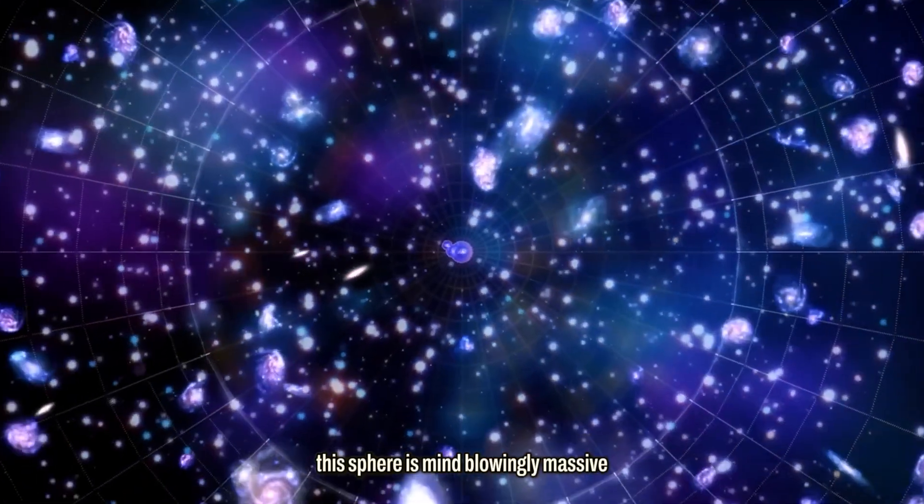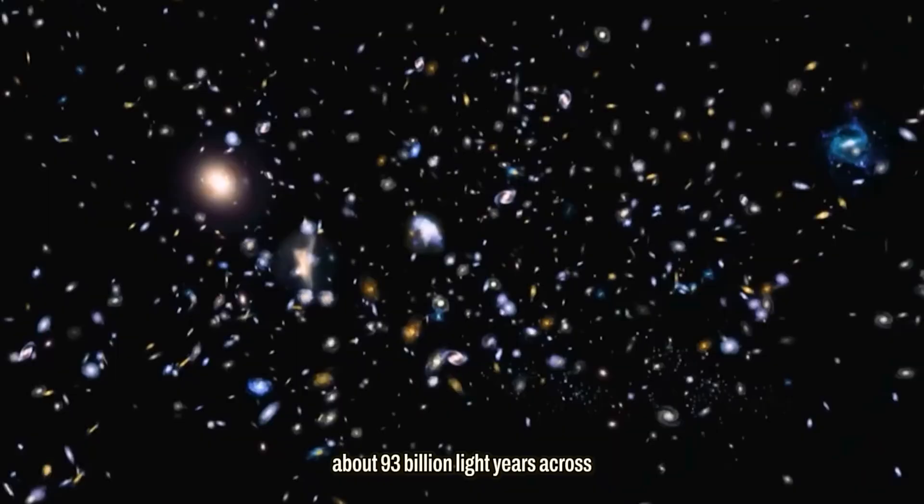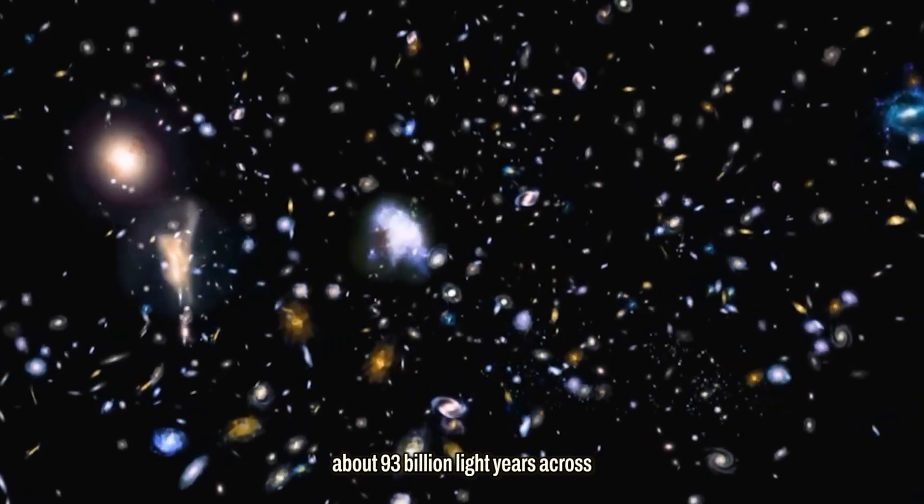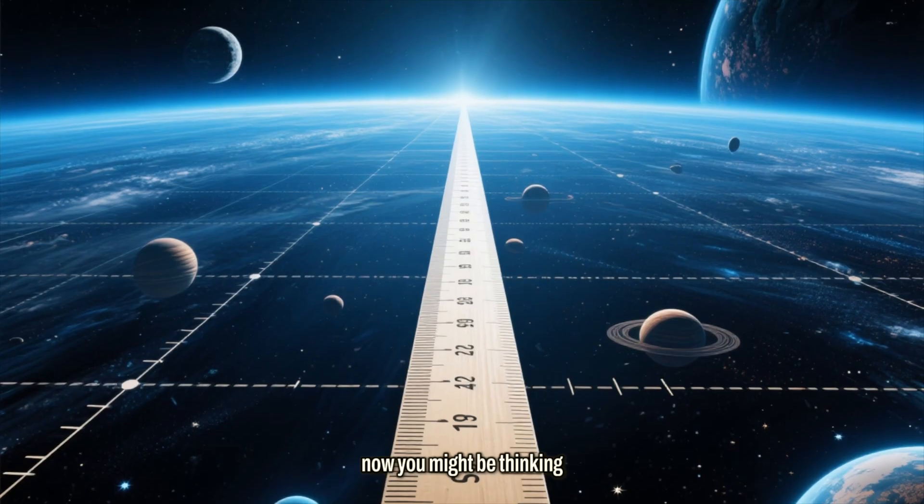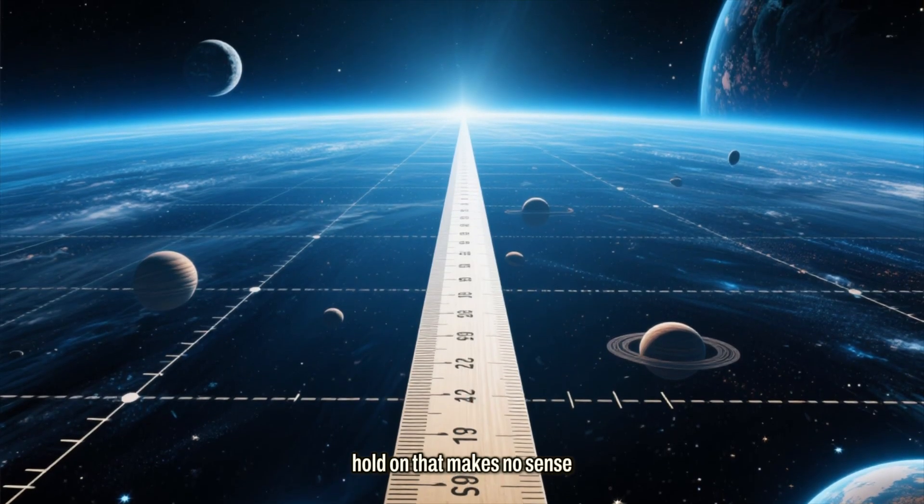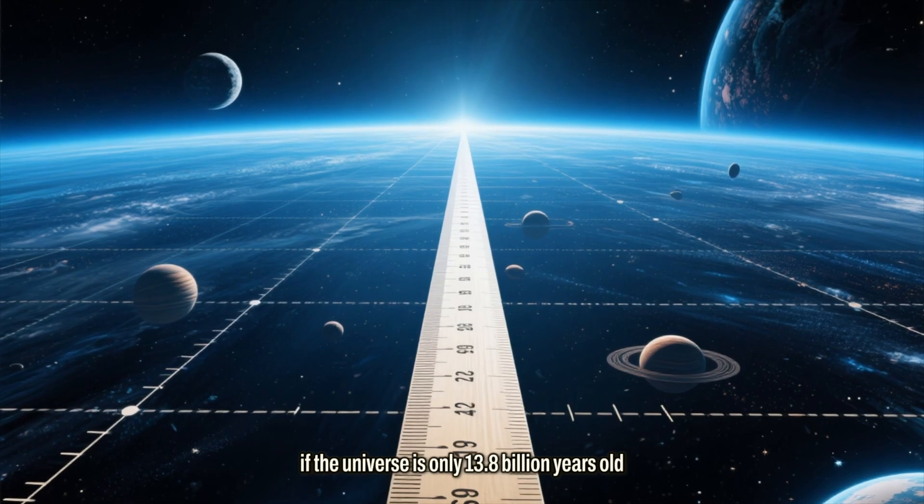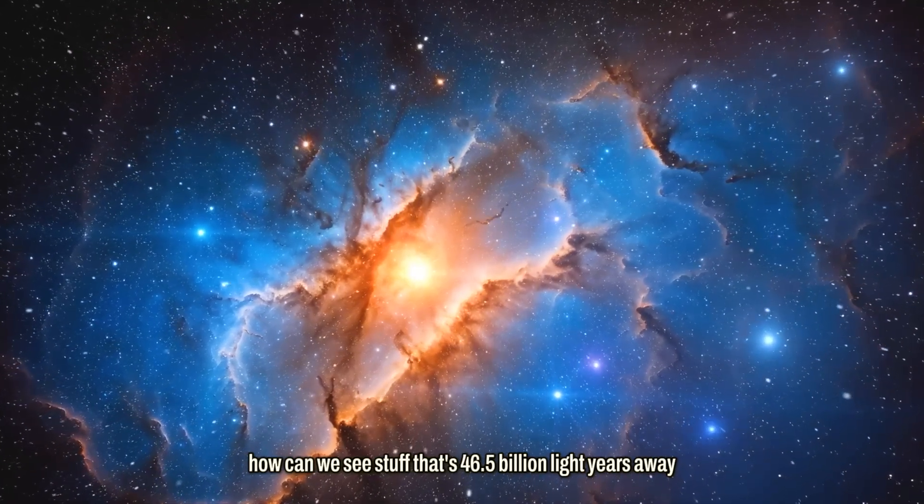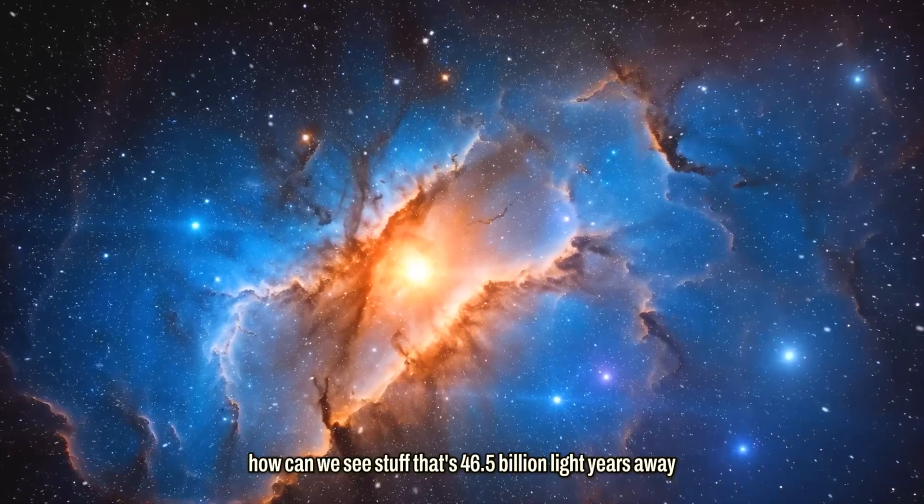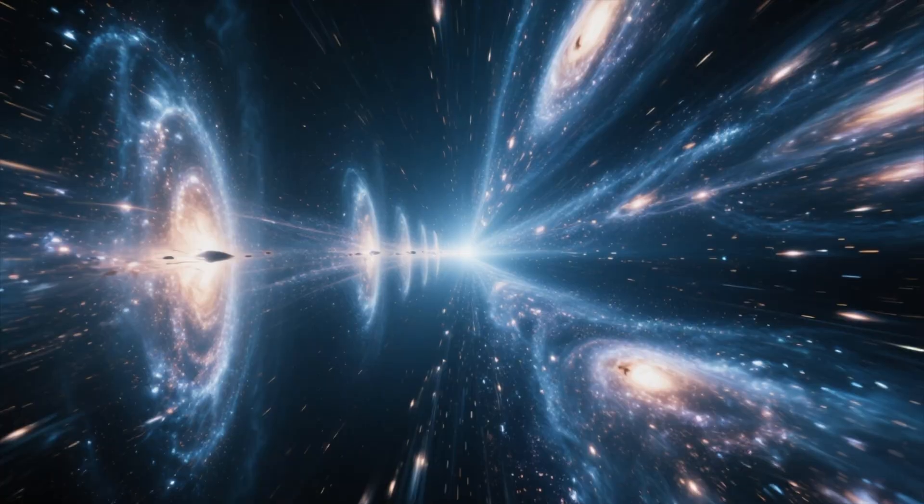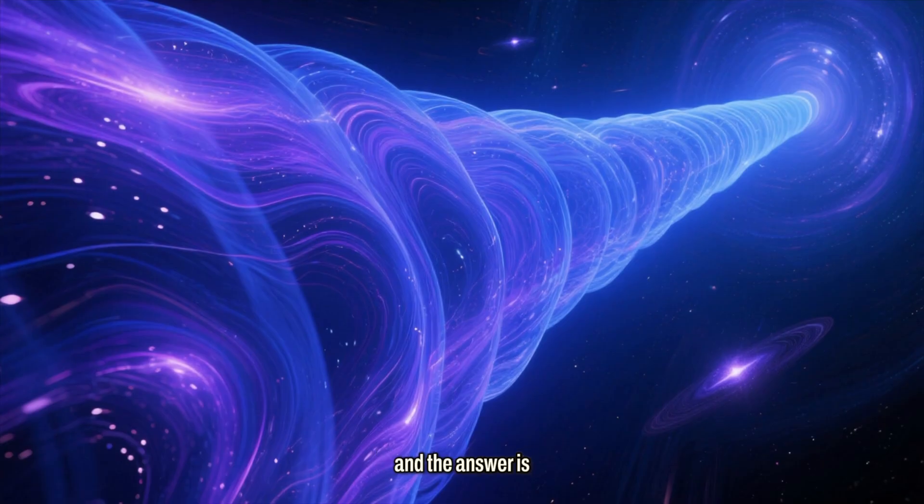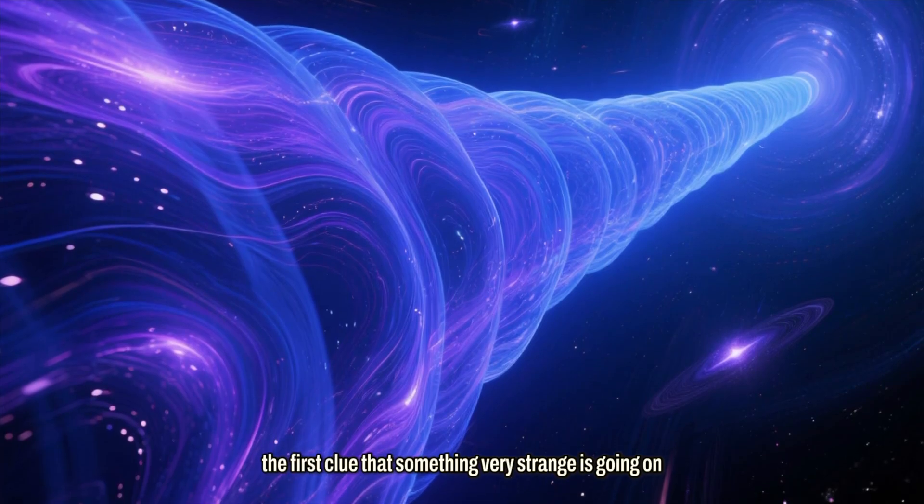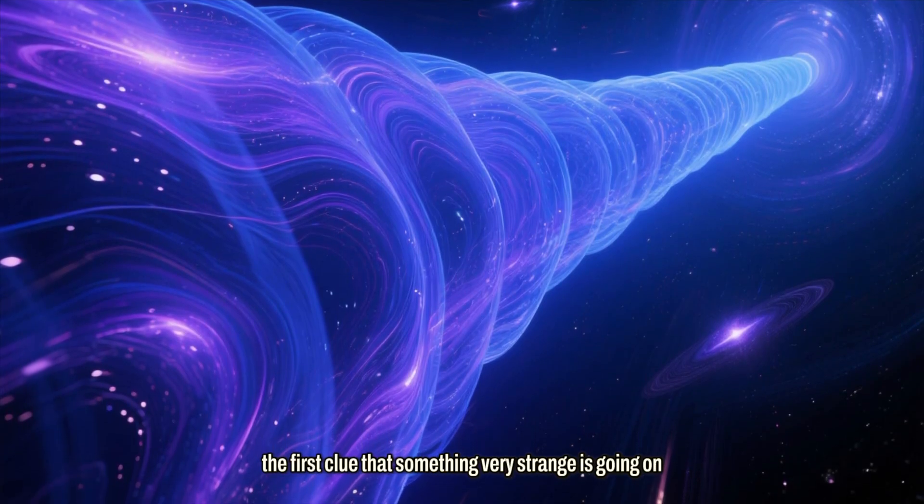This sphere is mind-blowingly massive, about 93 billion light years across. Now, you might be thinking, hold on, that makes no sense. If the universe is only 13.8 billion years old, how can we see stuff that's 46.5 billion light years away? It's a brilliant question, and the answer is the first clue that something very strange is going on.